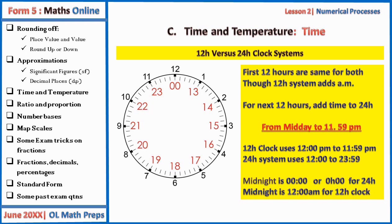From midday to 11:59 pm, the 12-hour clock uses 12:00 pm to 11:59 pm, while the 24-hour clock uses 12:00 to 23:59. Midnight on the 24-hour clock is 00:00. Midnight is 12 am on the 12-hour clock. Note: midnight is am.